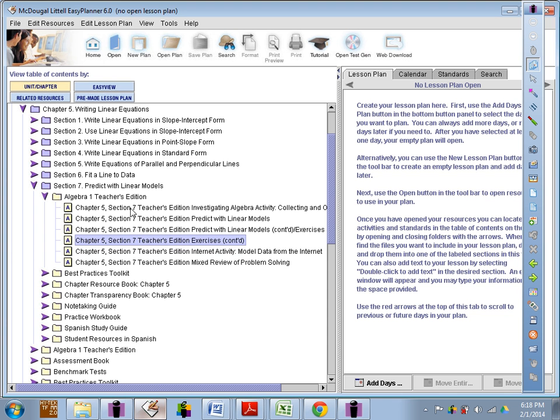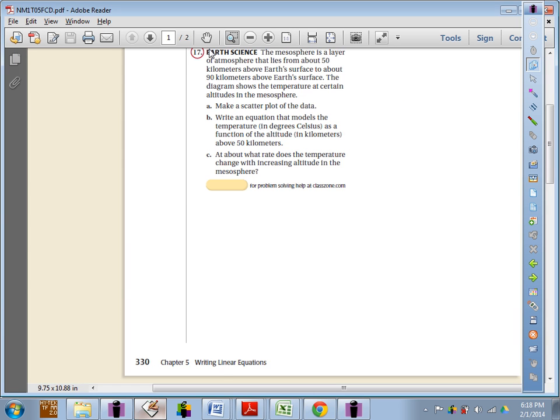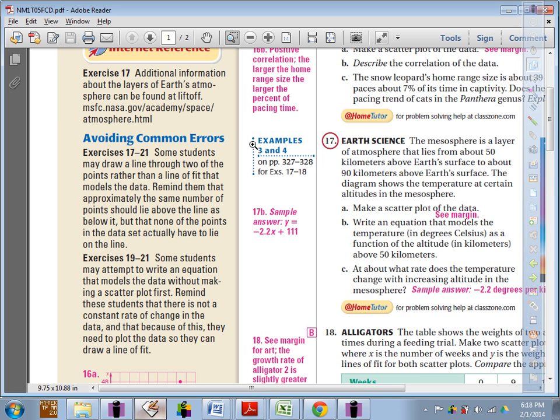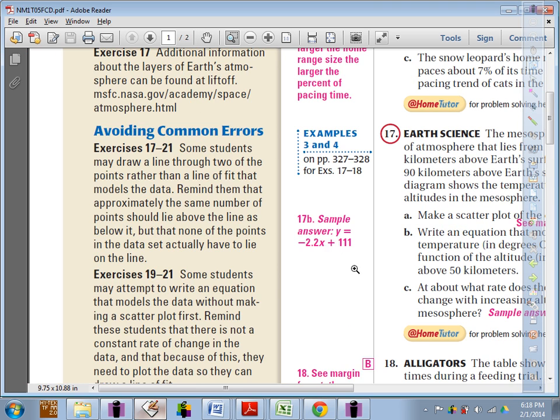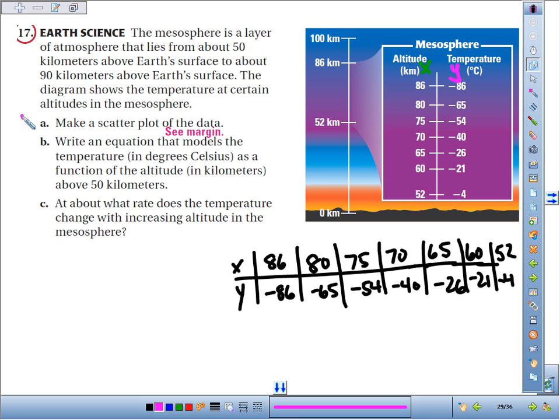The equation that a computer would come up with was negative 2.2x plus 111. We had negative 2.33x plus 116. We were pretty darn close. What else were we supposed to do? We made the scatter plot, we wrote the equation.